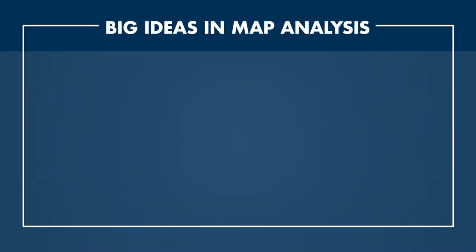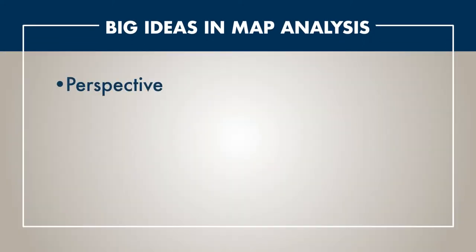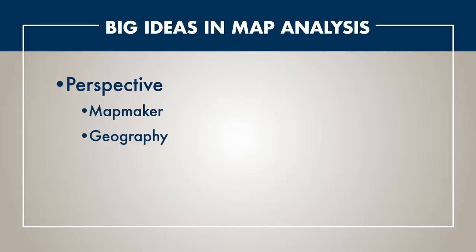There are some great big ideas to start with when you look at any map, whether it be one that was printed yesterday or one from hundreds of years ago. The first big idea is perspective — from whose perspective is the map made? Was the map maker European or Asian, for example? We also think about the perspective of the land: are we looking at the whole world or only part of it? And also the map's projection, meaning how the world is shown on a flat surface, which can affect the story of the map as well.